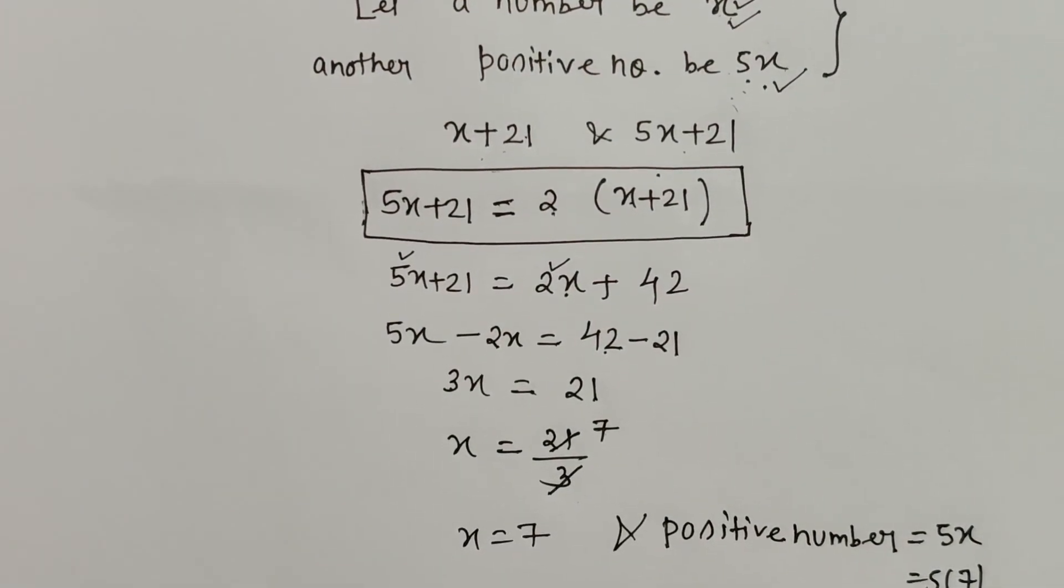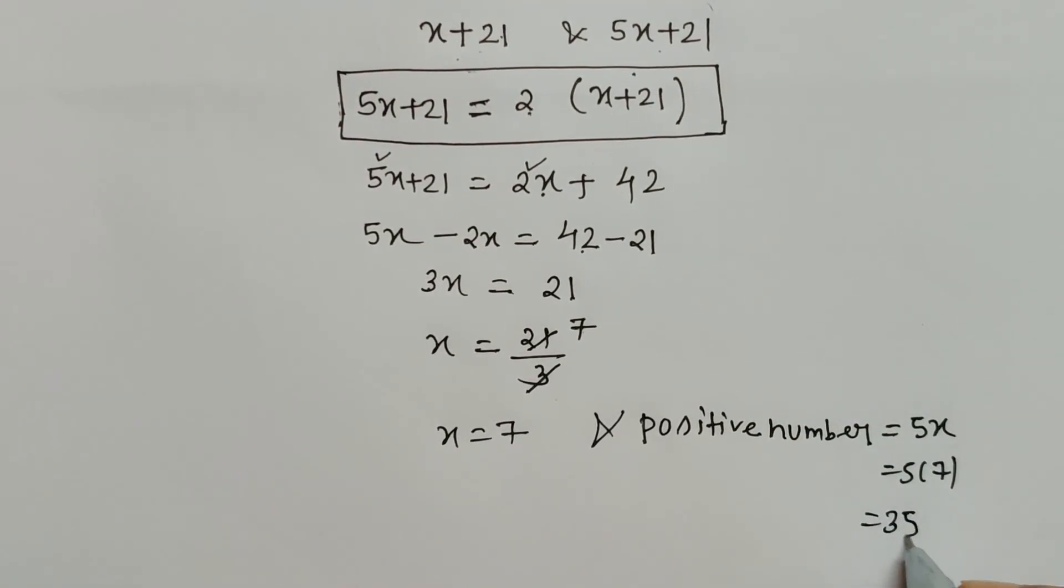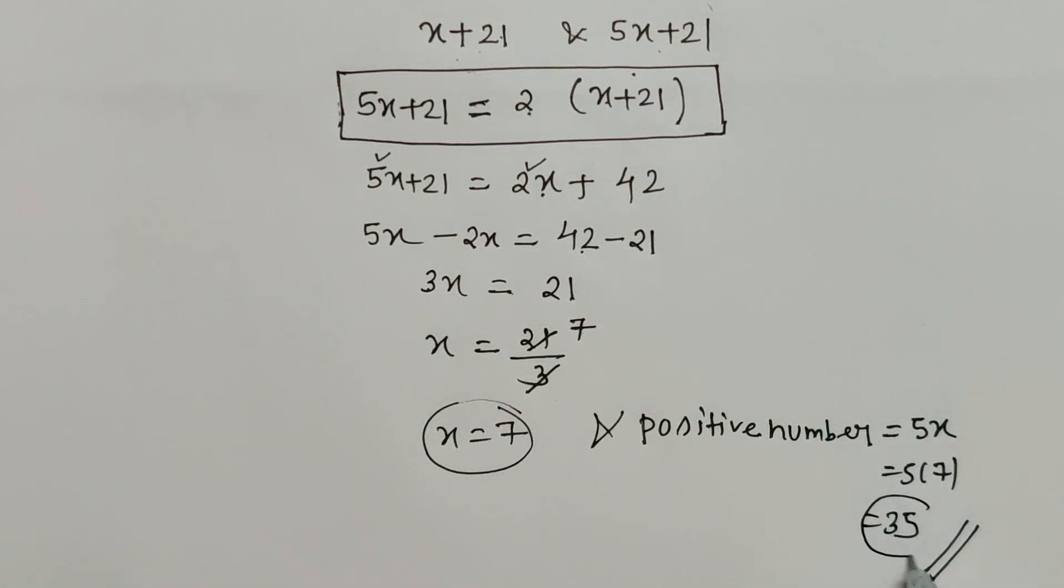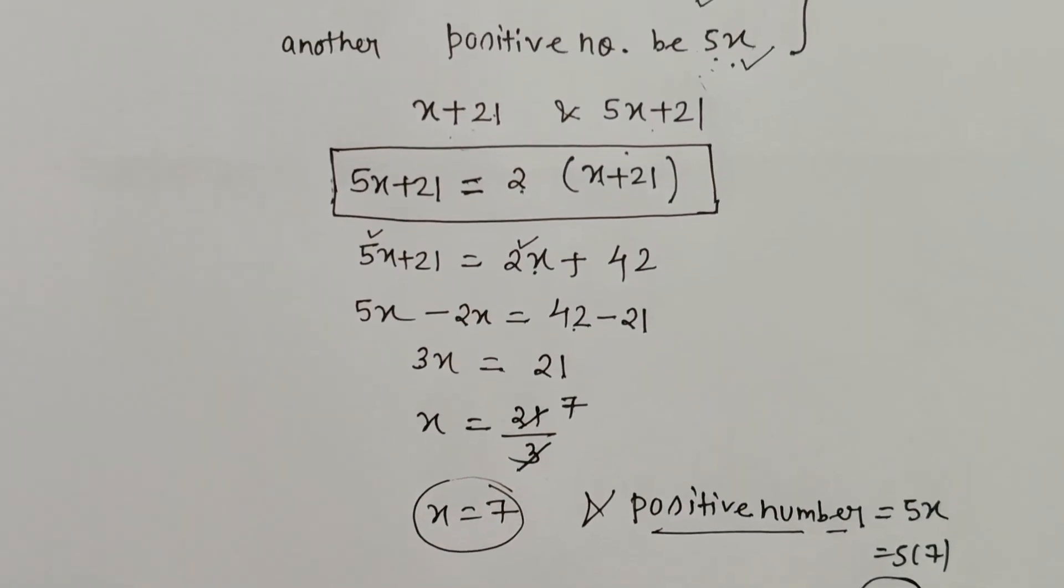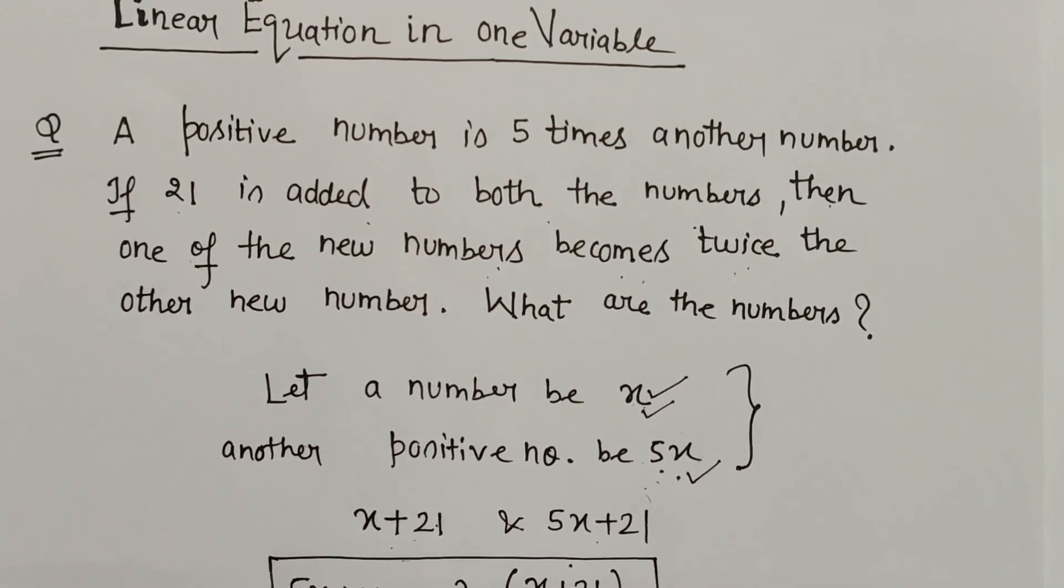5 into 7 which is 35. So these are the two values: x = 7 and the other number is 35. The positive number is 35. So this is how this question is to be solved in a very simple way. Thank you.